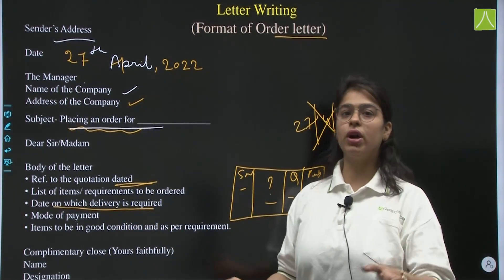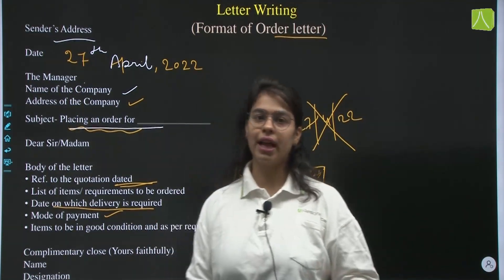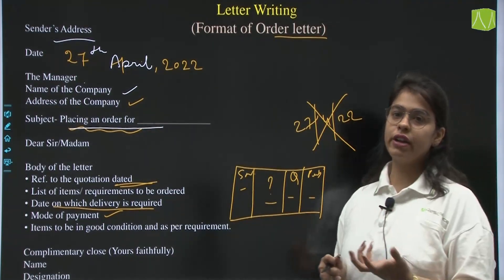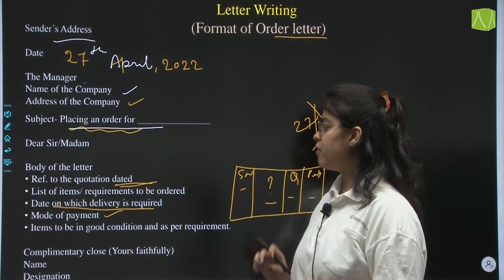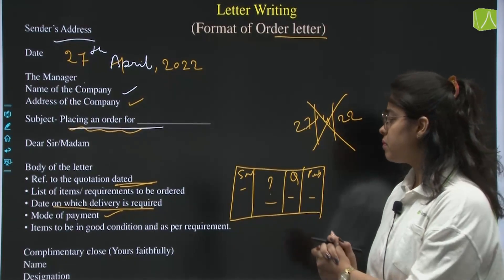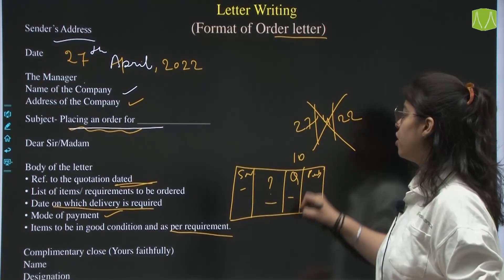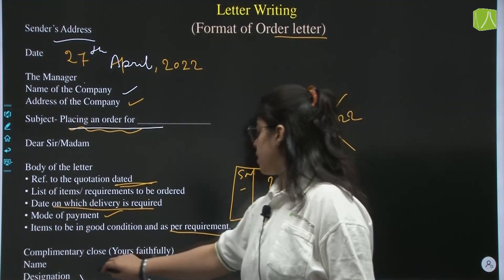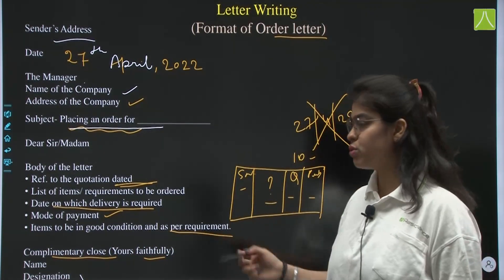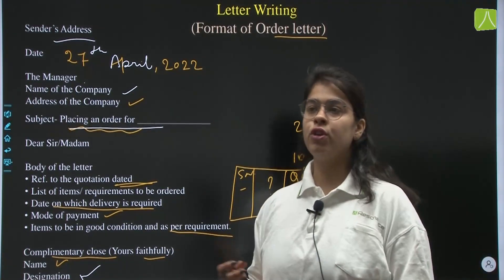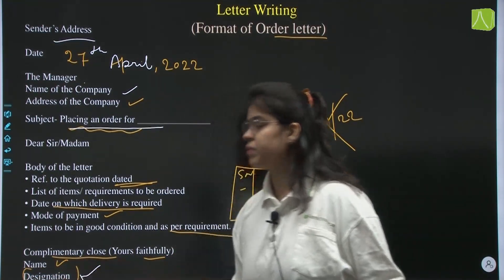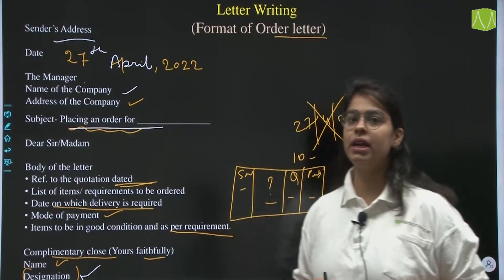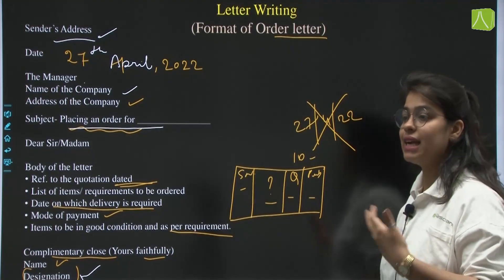Then mention the date on which you expect the delivery and the mode of payment, whether online or offline. You must state conditions — that items should be delivered in proper, good condition; if ordering books, they should not be outdated; and the quantity should be exactly as ordered, not more or less. Then give the complimentary close — 'yours faithfully' — followed by your name and designation, such as librarian or head of English department. You need not write the address again.